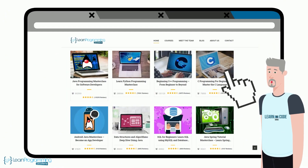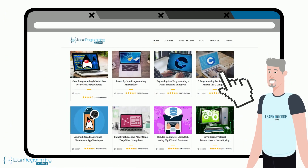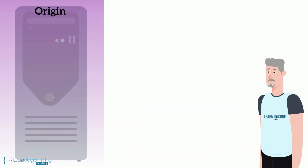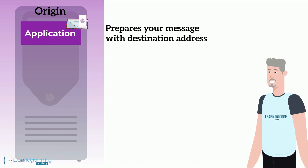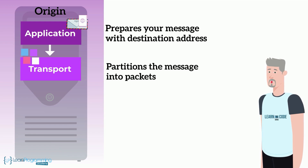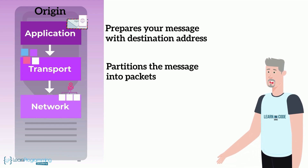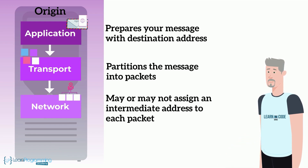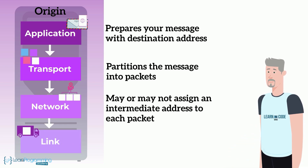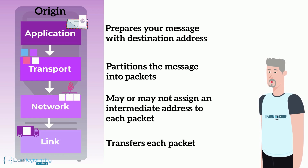How does this work? Well, when you click on a link in your browser, here's what happens. Inside your computer, the application software prepares your message with destination address. The transport software partitions the message into packets. The network software may or may not assign an intermediate address to each packet depending on the destination's address, and the link software transfers each packet.